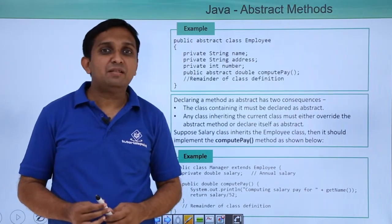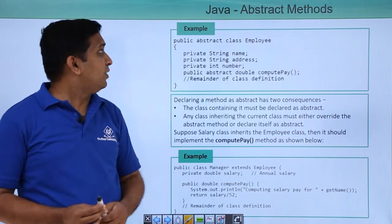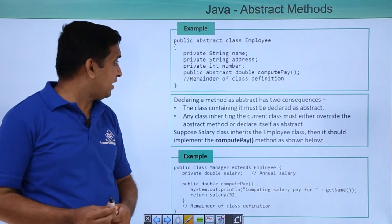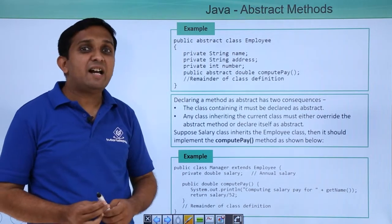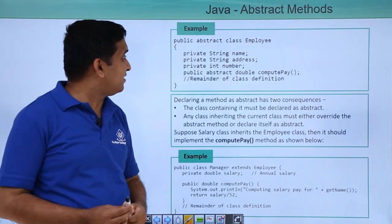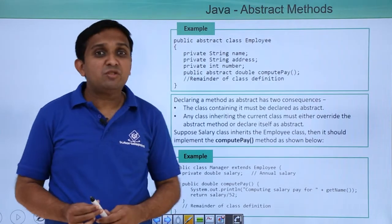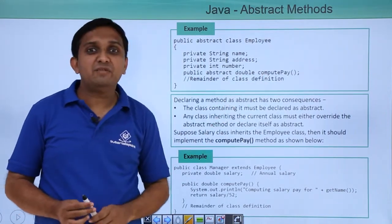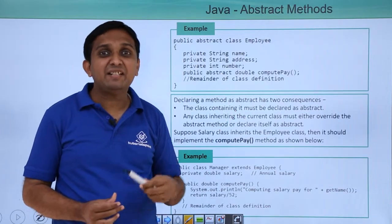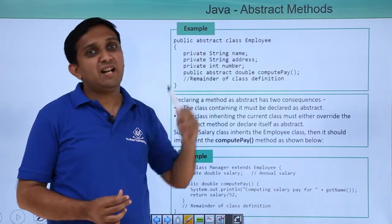Here is one example where we have one abstract class, the Employee class. In that abstract class, there are attributes like name, address, and number. Now, computePay is a method which is declared as abstract because it is not having any definition for the Employee class.